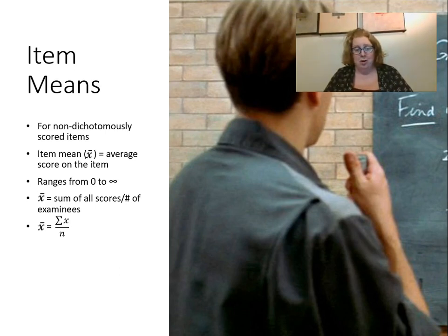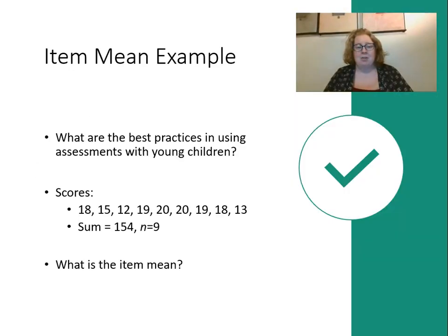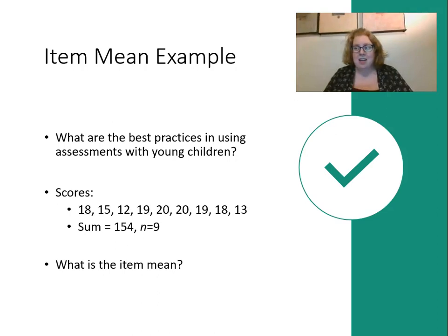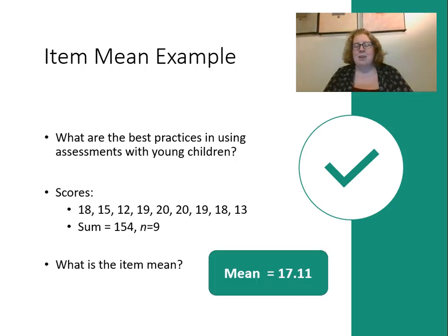Here's an example: the question was about using best practices, scores ranged from 13 to 20, the sum was 154, and there were nine students who took it. To calculate the mean, you divide 154 by 9. Get out your calculators — jokes on that teacher who said you wouldn't have a calculator with you all the time. You should get about 17.11.